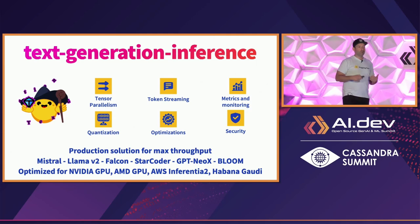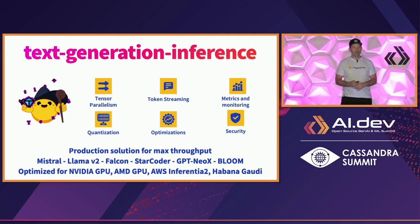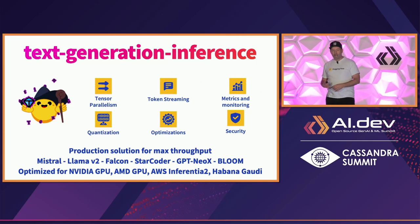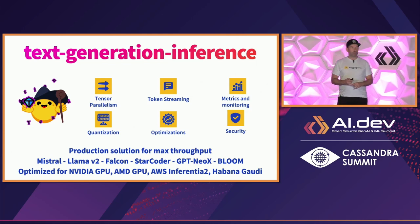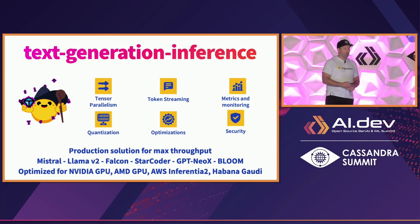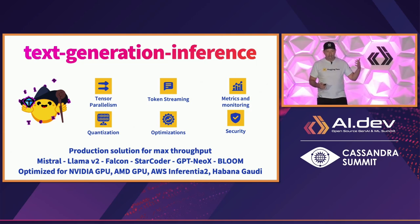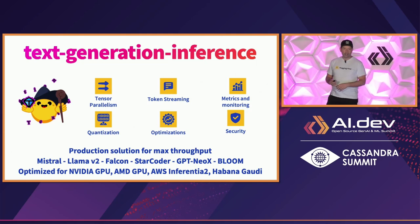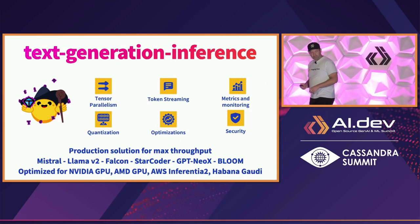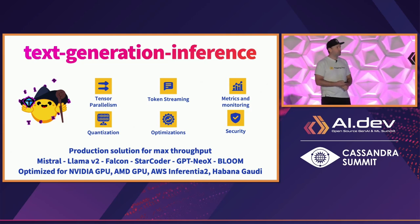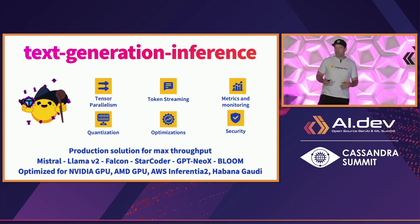Now you've got a model — what do you do? You need to deploy it. We have a great tool for that called Text Generation Inference. It's our production solution to give you maximum throughput for your models in production. It works out of the box with Mistral, LLaMA 2, Falcon, and more. It's optimized for various hardware including NVIDIA GPU, AMD GPU, and we have solutions for AWS Inferentia 2 as well as Habana Gaudi 2.